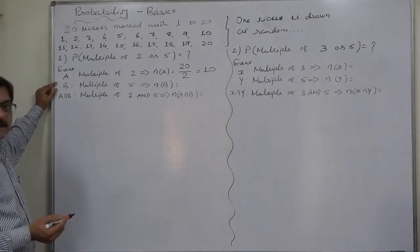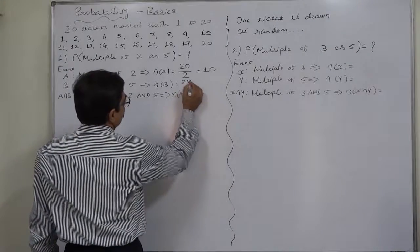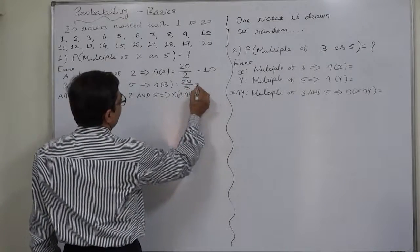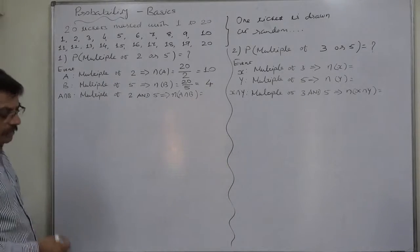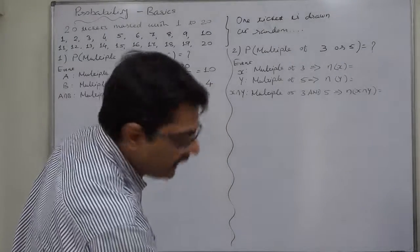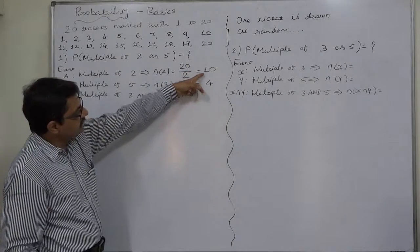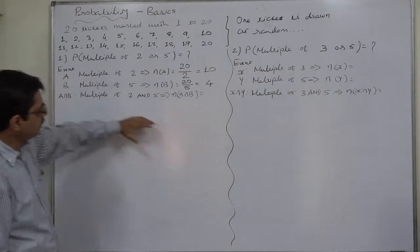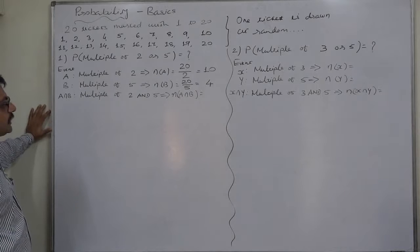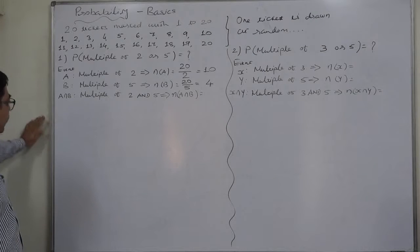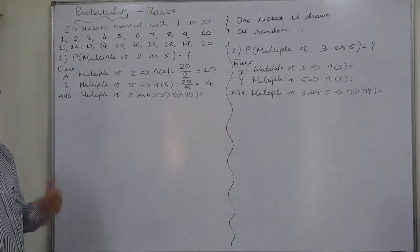Similarly, for event B — multiples of 5 — the favorable cases will be 20 divided by 5, which comes to 4. The important thing is there can be some common values in these 10 and 4, that is numbers which are multiples of both 2 and 5. This is represented by A intersection B, because both events happen simultaneously — it is a joint event.